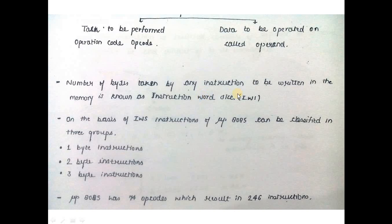Number of bytes taken by any instruction to be written in the memory is known as instruction word size. There are three groups: one-byte instructions, two-byte instructions, and three-byte instructions.